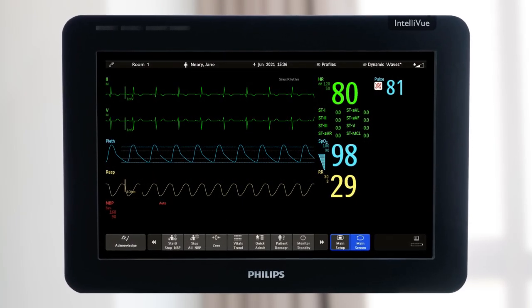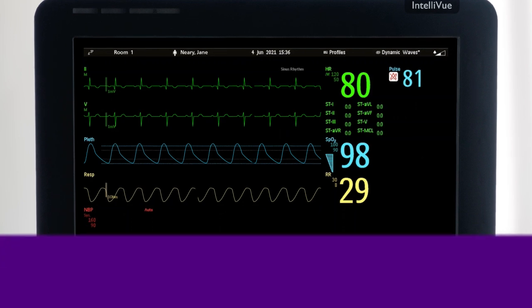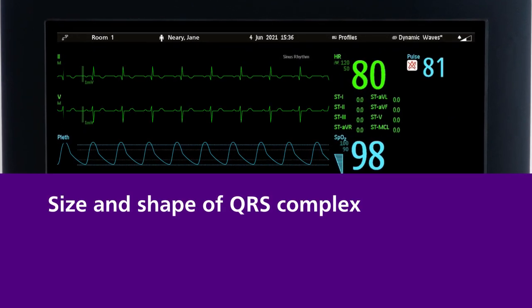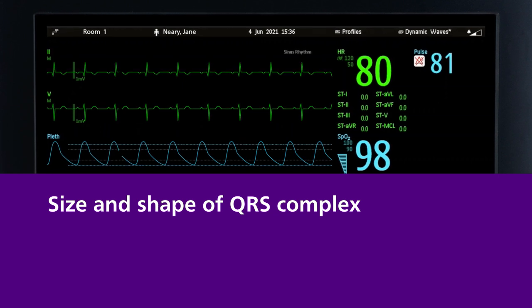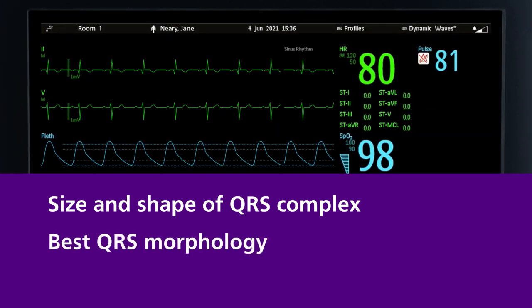One of the most important steps in ensuring optimal arrhythmia monitoring is lead selection. The size and shape of the QRS complex are important for the algorithm to properly detect and classify beats, so you must choose leads that produce the best QRS morphology.